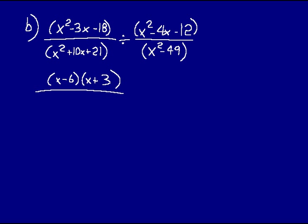On the bottom, we'll have X plus 7 times X plus 3. Now put a multiplication symbol here and take the denominator of the original rational expression.